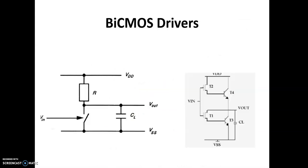Another option to reduce delay is using a Bi-CMOS driver. Bi-CMOS devices have better gain compared to CMOS devices, and the delay characteristics of CMOS are not good compared to BJT transistors. The output current of BJT transistors is high, therefore the delay will be less. These bipolar transistors are used at the output side when driving capacitive loads, because their high current reduces delay.